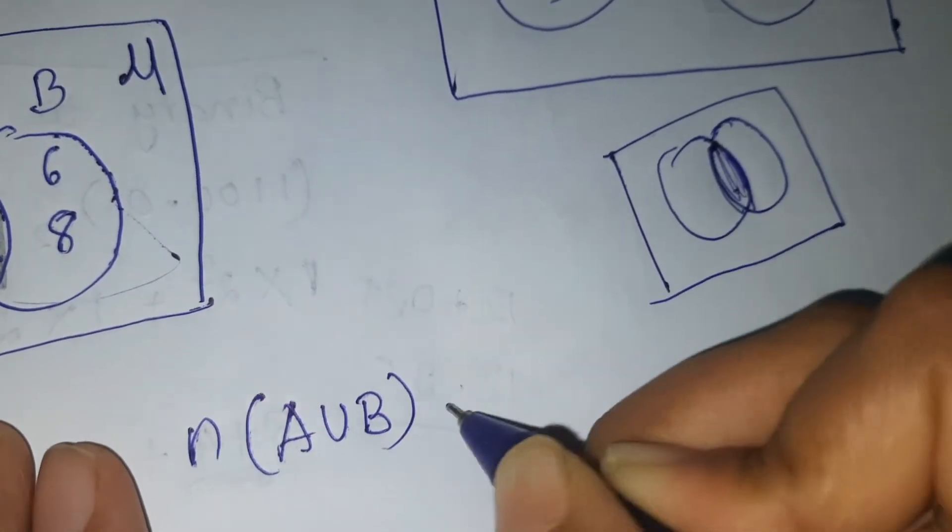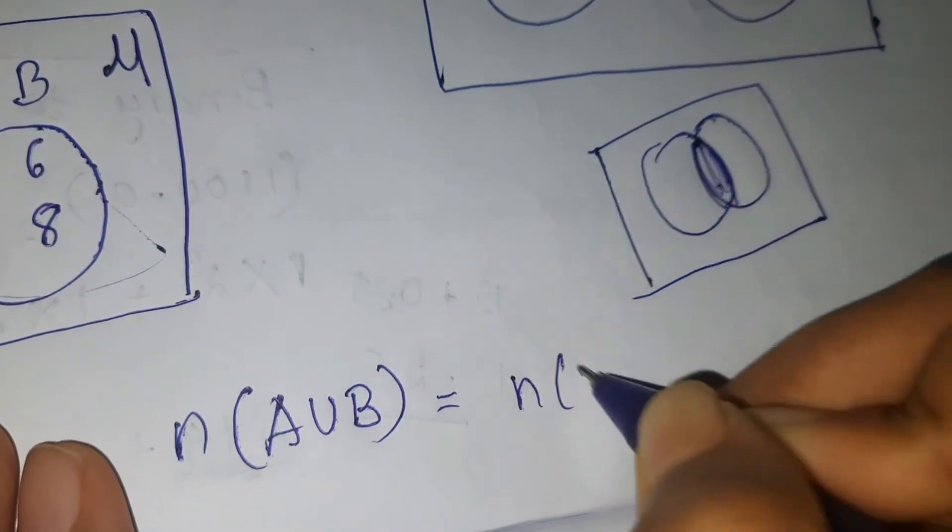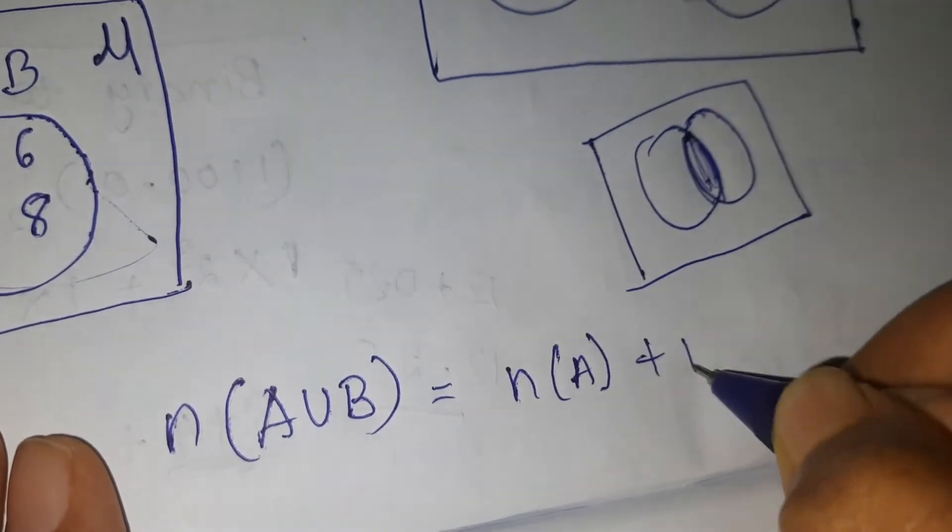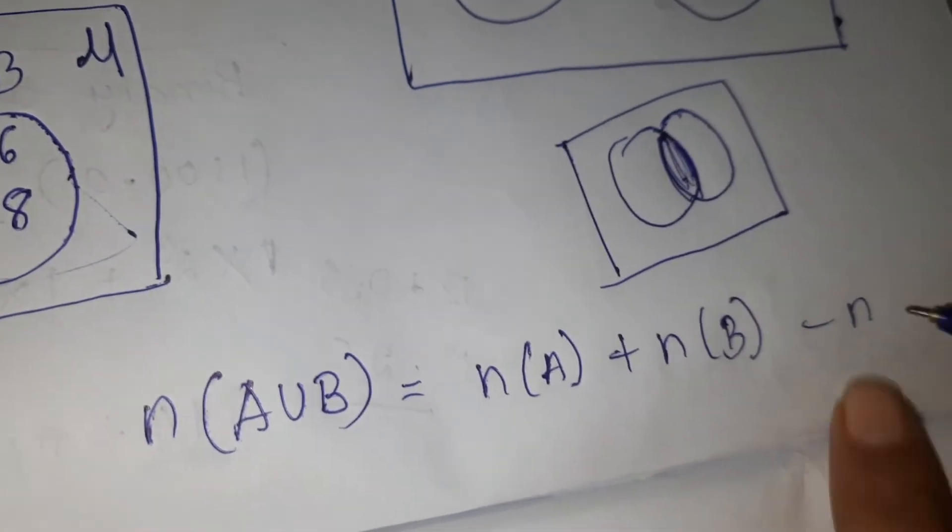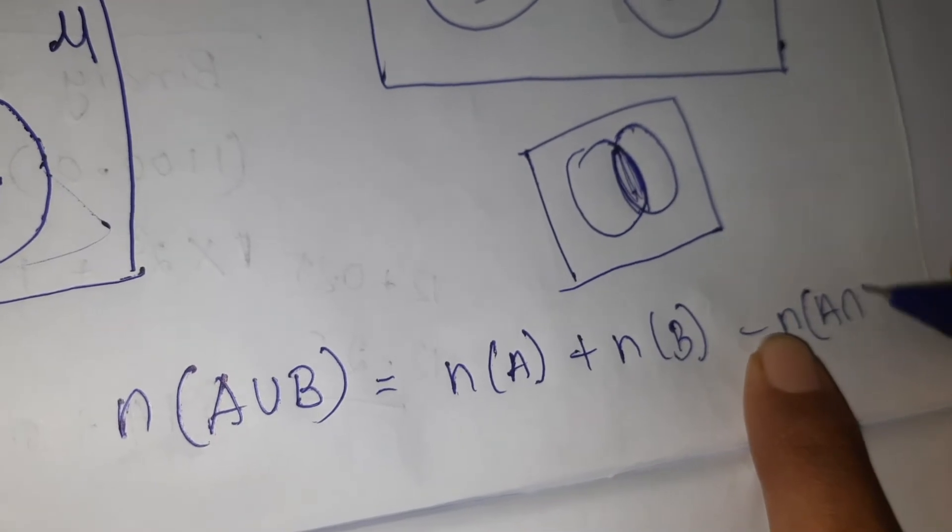is equal to n(A) plus n(B) minus n(A intersection B).